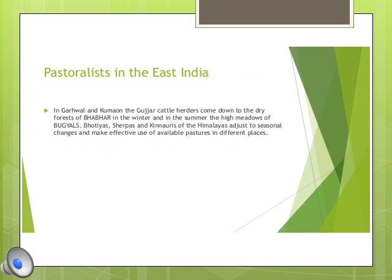The Pastoralists in the east of India, near Himachal Pradesh, include the Gadhi shepherds. They also spend their winter on the low Shivalik hills and summer in Lahul and Spiti. Some Gujaras stay in Kumaun and Garhwal, spending summer in Bughyal and winter in Bhabar. The Bhotias, Sherpas, and Kinnari are also pastoralists who move as per seasonal changes and make best use of the pastures.